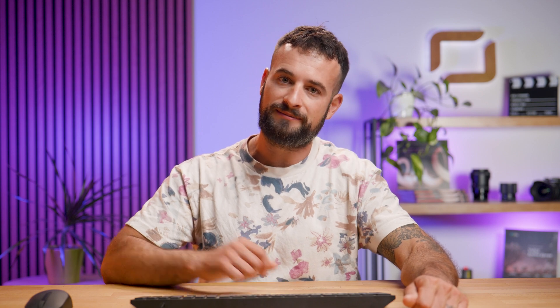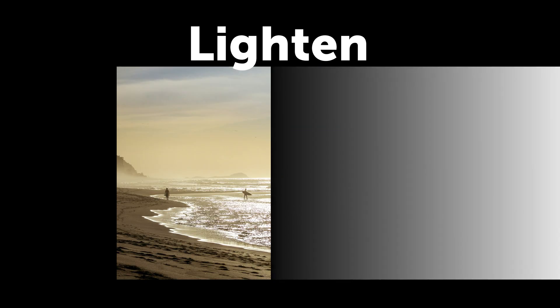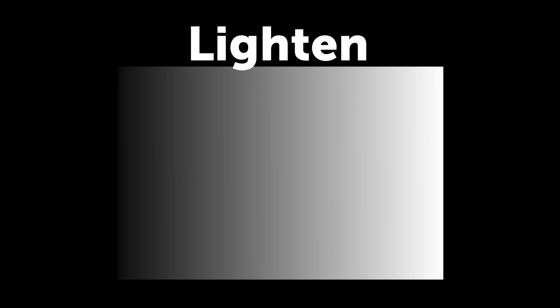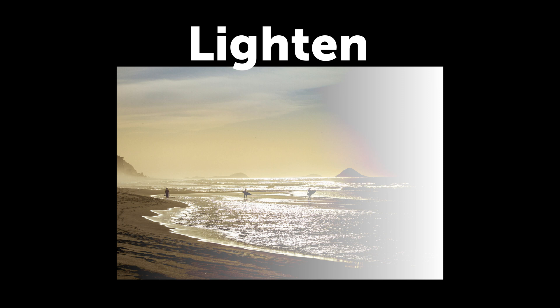Now let's take a look at four different modes focused on lightening up our photos — they're the complete opposite of what the four previous ones did. Lighten results in a lighter image by selecting the lighter areas in the first and second layers. It only shows the lighter sections and is useful for removing a black background. You can use Lighten to add a moon to a photo with a dark sky, for example.